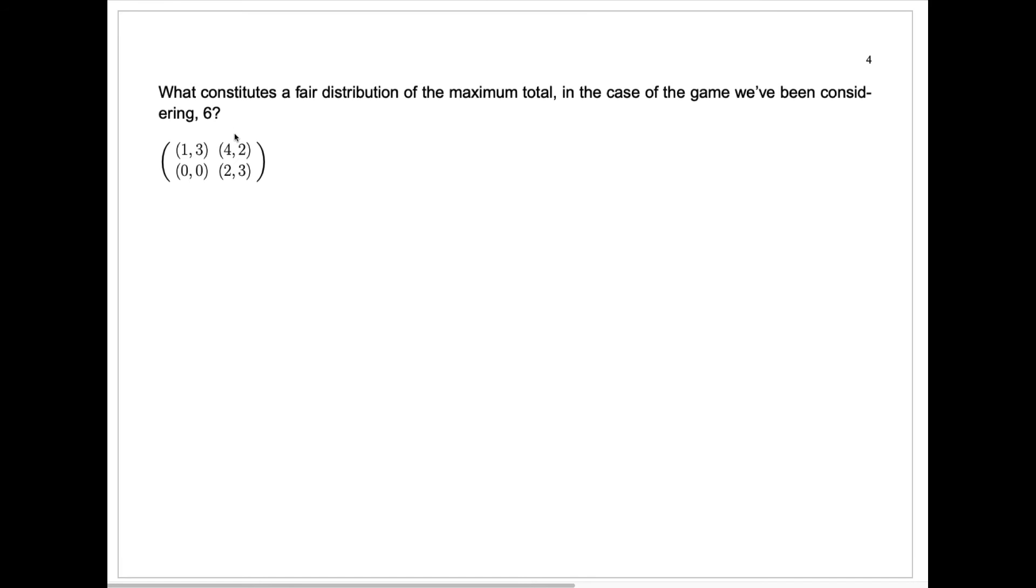One possibility is they look and say, okay, there's the most, the most total payment here is six. That's the most that the players combined can get. Why don't they just play, why don't they just agree that player one should play row one and player two should play column two? And then they'll get a total of six. Player one receives four. Player two receives two.